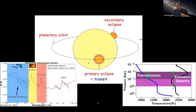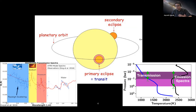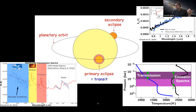One important thing to remember is that in transmission spectra, we are probing a very small part of the atmosphere — quite high up, around the one-millibar region, as shown in this temperature-pressure plot. So if you want to go deeper into the atmosphere, what do we do? That's where secondary eclipse comes in.